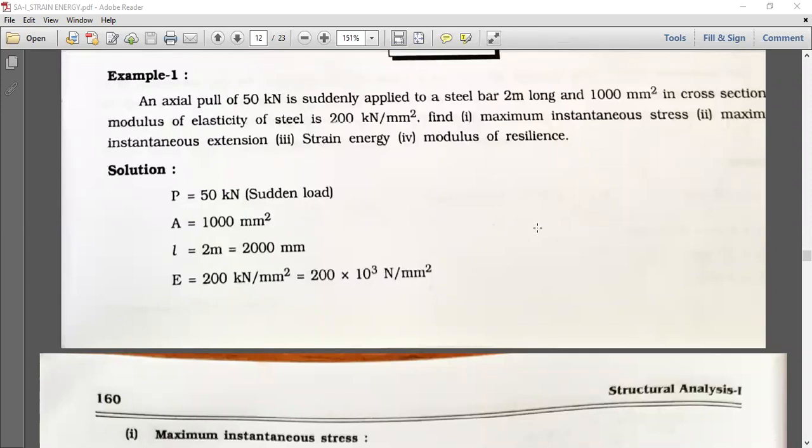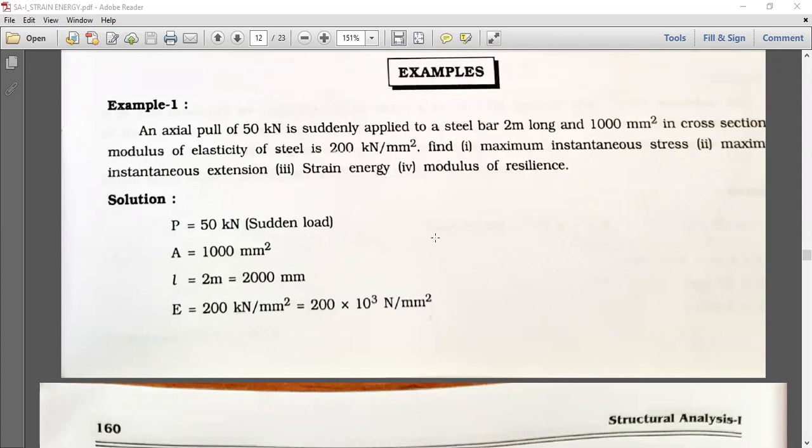In the previous lecture, we completed all the theory portion of that chapter. Now we are going to start our example exercises. Let us start with a simple example. An axial pull of 50 kilonewton is suddenly applied to a steel bar which is 2 meters long and 1000 mm square in cross section.